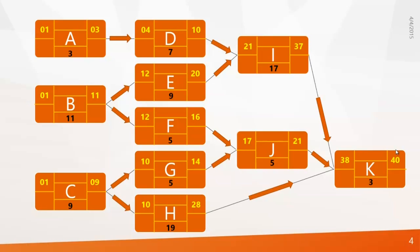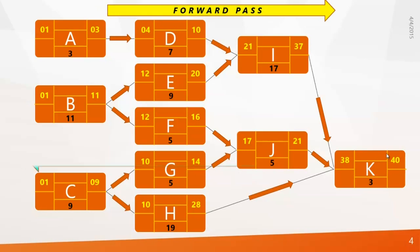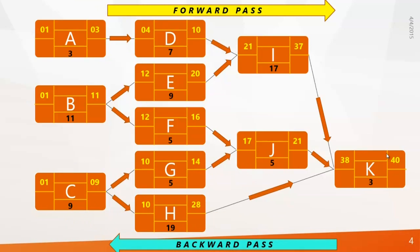Next we need to find out the late start and late finish of all activities. This method is called the backward pass. Let's assume there is no delay in this project and our client wants to finish it in 40 days, so late finish becomes 40 days. Now we calculate everything in reverse order.